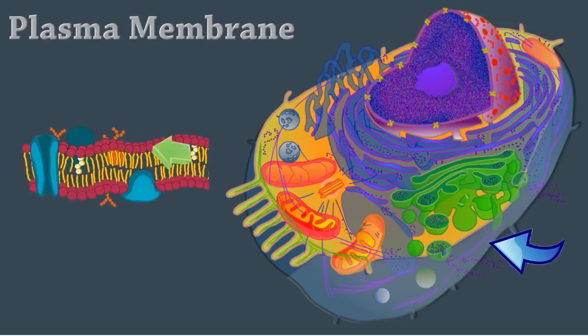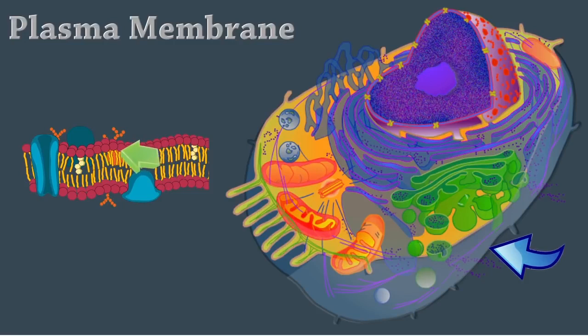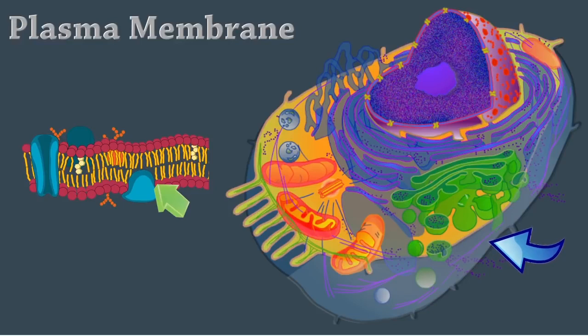The plasma membrane encloses the cell. It's made from a bilayer of phospholipids, cholesterol, and proteins, and it acts as a semipermeable barrier. It creates the cell's internal and external environments.